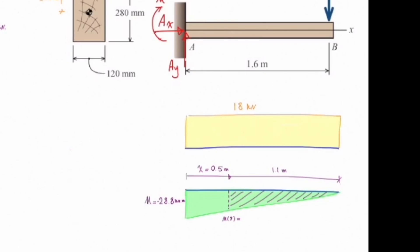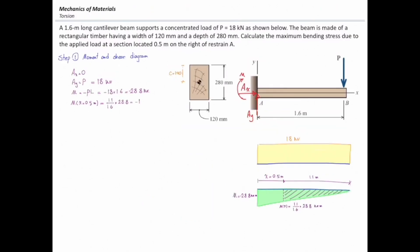Thus, I can simply say, moment at this cut section would be equal to 1.1 divided by 1.6 times 28.8 kN·m, which gives me negative 19.8 kN·m.